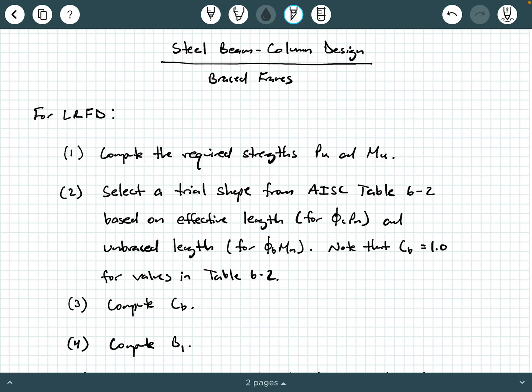And based on the unbraced length, which is going to tell us something about our flexural strength, phi B MN. And we need to remember, I've said this in previous videos, that CB equals 1.0 for the values in table 6-2 for flexure. So you're going to select a trial shape. And again, you're selecting this trial shape based on axial compressor strength and flexural strength that are required from your step one.